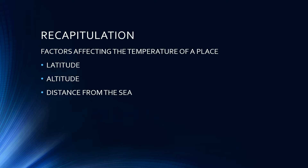For latitude, higher the latitude, lower the temperature, because of the spherical shape of the earth. As we move towards the poles, the rays become more and more slanting. So the torrid zone has a higher temperature, whereas as we move towards the frigid zone, the temperature becomes low, owing to the slanting rays of the sun.